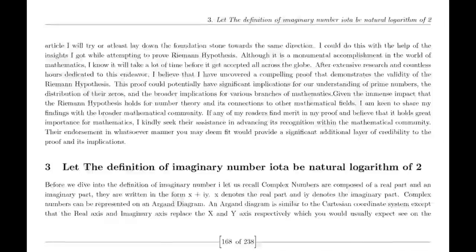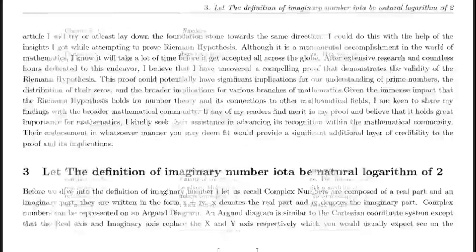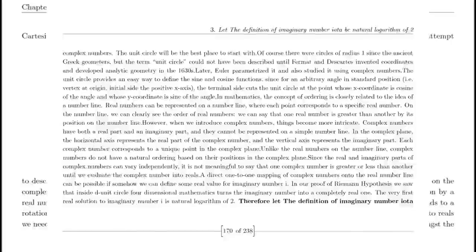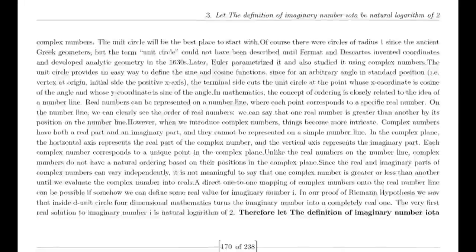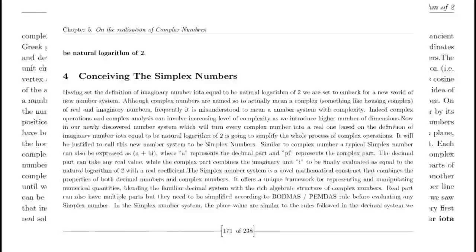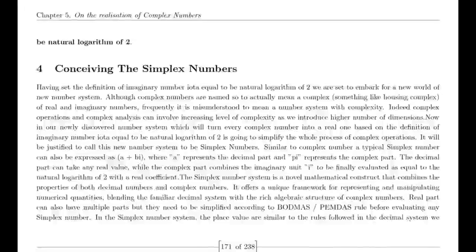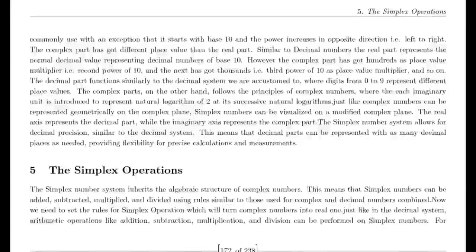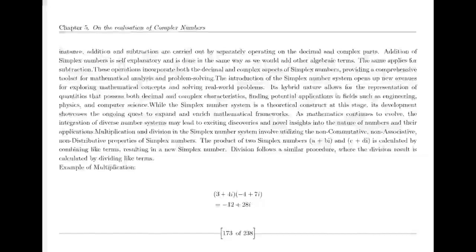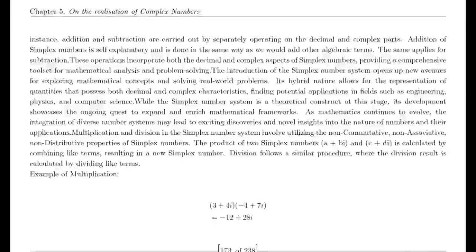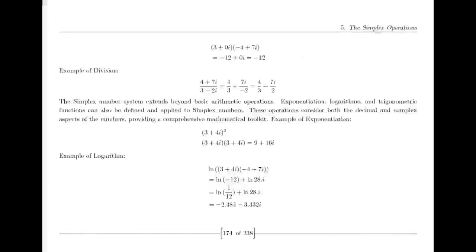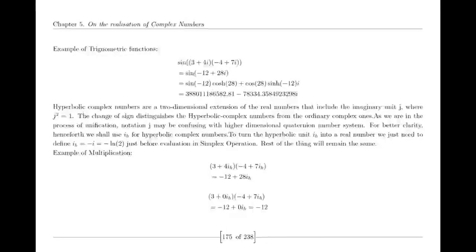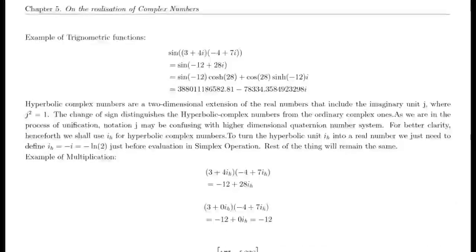As Suraj continued his journey through the mathematical landscape, he ventured into an intriguing realm — the transition between complex numbers and real numbers within the framework of decimal numbers. He sought to establish a set of rules governing basic mathematical operations — addition, multiplication, subtraction, and division — specifically tailored for this transition. He named this new concept 'simplex numbers' and the associated operation 'simplex operations.' Suraj envisioned simplex numbers as a way to bridge the gap between complex and real numbers, allowing for a seamless flow between these two realms. His goal was to create a framework that would simplify calculations and enhance understanding, particularly for students and those new to the concepts of complex analysis. In his presentations, he meticulously outlined the rules of simplex operations, demonstrating how to transition from complex to real numbers while adhering to his newly defined principles.